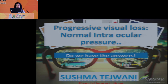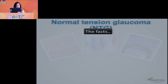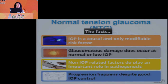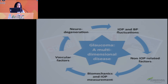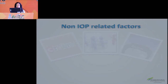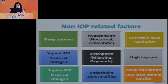NTG is a multidimensional disease. IOP is the only modifiable factor, yet glaucoma and progression occur even with normal IOP. Other factors include BP fluctuations, non-IOP related factors, vascular factors, neurodegeneration, and measurement errors. A patient presented with 6/6 vision, normal pressures, slightly lower pachymetry, and open angles, with normal fields in 2004 but progressing superior arcuate defects and worsening GDX and HRT changes subsequently.